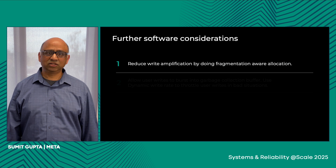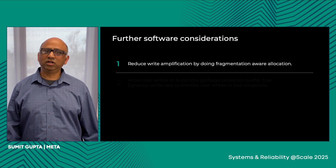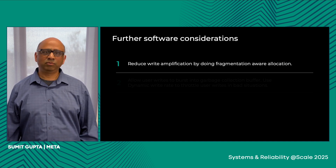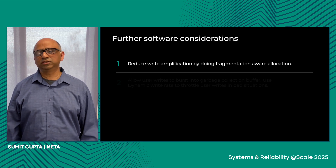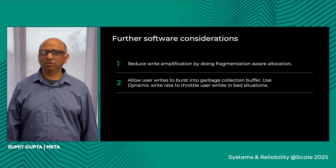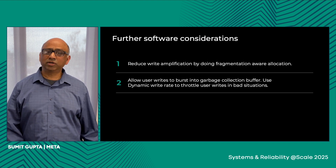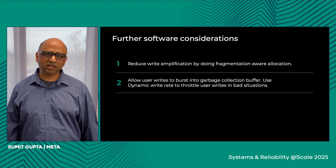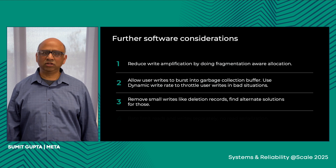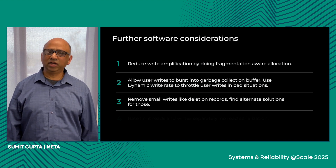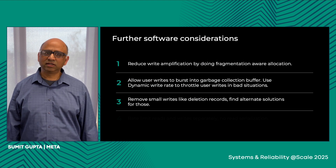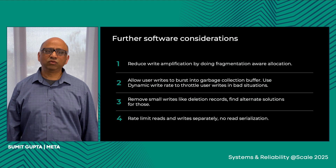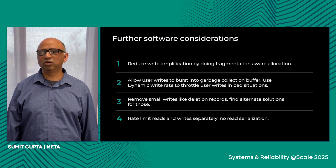One of the things with QLC is that it does not provide enough write bandwidth, so we need to think about reducing write amplification and any other means of reducing writes to the media. We do this by fragmentation-aware allocation — putting data in locations which are the least fragmented. We also have fixed buffers for garbage collection so user writes can burst into those buffers, though garbage collection can lag behind. We solve that by using dynamic write rate throttling in case GC does get behind. Additionally, we remove small writes like deletion records that go to QLC. Finally, since read and write rates on QLC are different, we rate-limit them separately so that reads do not get serialized behind writes.